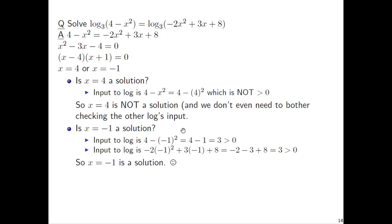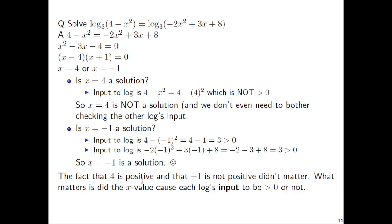Notice what happened in this problem. The fact that 4 is positive and negative 1 is negative — neither of those things matter. What matters is: did that x value cause each log's input to be bigger than 0? In the case of x = 4, it caused the input 4 − x² to not be bigger than 0, so 4 was not a solution even though 4 is positive. And x = −1 is negative, but plugging it in makes both log inputs positive, so negative 1 is a solution.